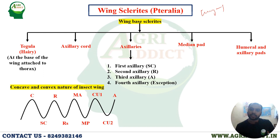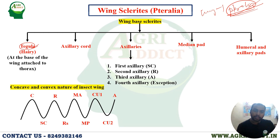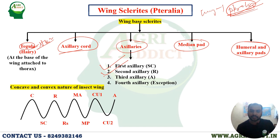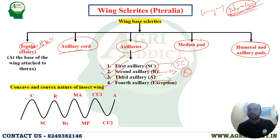Wing sclerites are also called pteralia. There are five types of pteralia: tegula, axillary cord, axillaries, median paired plates, and humeral or axillary plates. The axillaries include first, second, third, and fourth axillary. An important exam question: the first axillary originates from the sub-costal vein, the second axillary from the radial vein, and the third axillary from the anal vein. The fourth axillary is found only in Hymenoptera and some other insects.